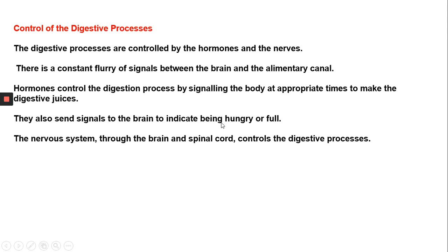Hormones control the digestion process by signaling the body at appropriate times to make digestive juices. They also send signals to the brain to indicate being hungry or full. The nervous system, through the brain and spinal cord, controls the digestive processes. Go through your textbook, including the blue boxes explaining activities related to digestive processes and the yellow boxes providing extra information regarding the digestive system.